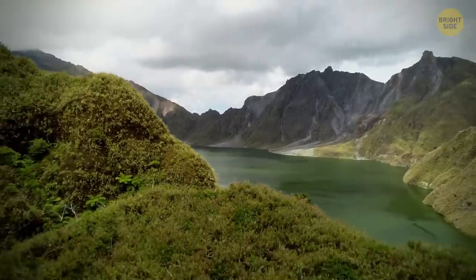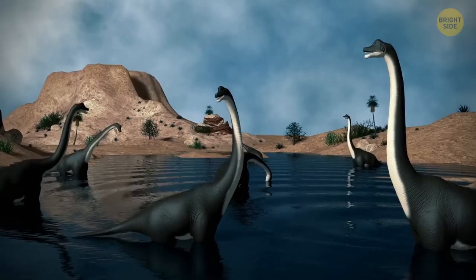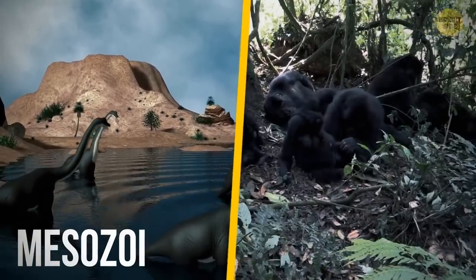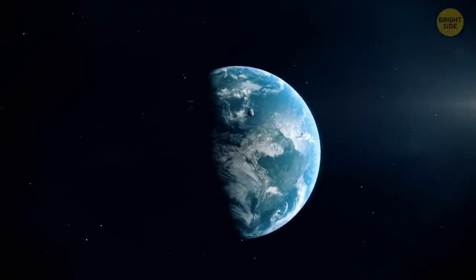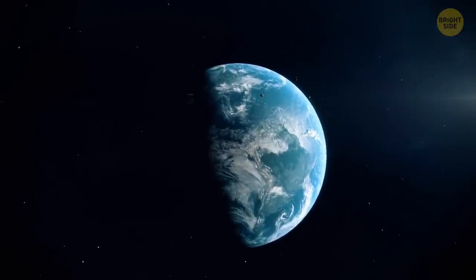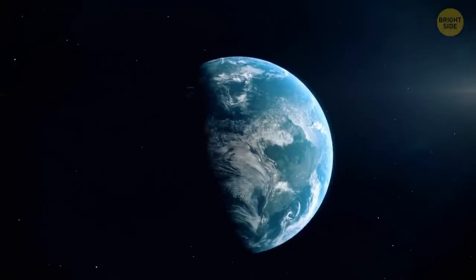The temperature on the continents and in the oceans dropped by an average of 50 to 90 degrees Fahrenheit. Sounds horrific, doesn't it? And of course, it caused one of the greatest extinctions in the history of the earth's biosphere. Amazingly, the earth was able to recover after such a catastrophe. This event became the boundary between the Mesozoic and the Cenozoic eras. So now, those who wondered, how could a small meteorite destroy all the dinosaurs, probably understand the answer.